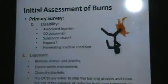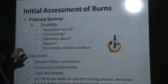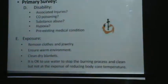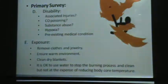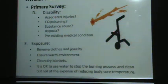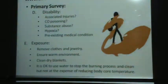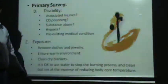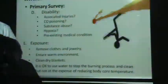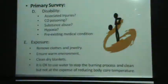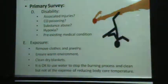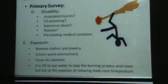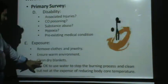Pre-existing medical conditions that might make the injury worse must also be noted. For exposure (E), we need to take off any loose clothes or jewelry. We keep the patient warm using blankets because they may develop hypothermia from fluid loss. If we want to extinguish fire, we can use water, but make sure it does not compromise body temperature.